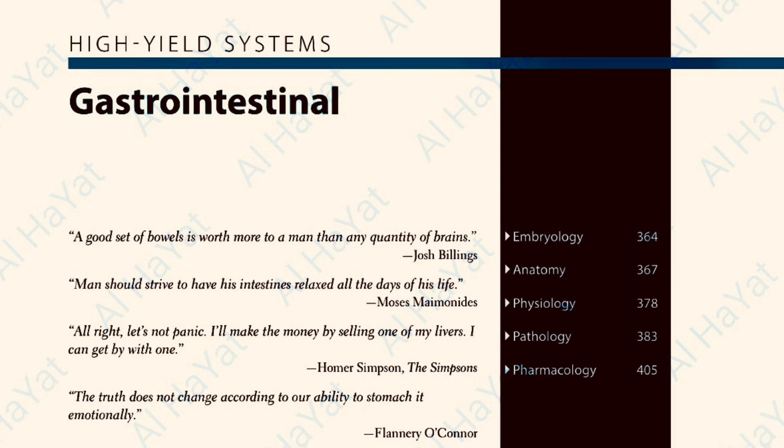Today we are going to talk about the gastrointestinal system, starting with GI embryology. The GI tract derives from foregut, midgut, and hindgut. The foregut gives us the esophagus to the duodenum at the level of the pancreatic duct and common bile duct insertion, at the level of the ampulla of Vater. In four to six weeks of development, the stomach rotates 90 degrees clockwise.